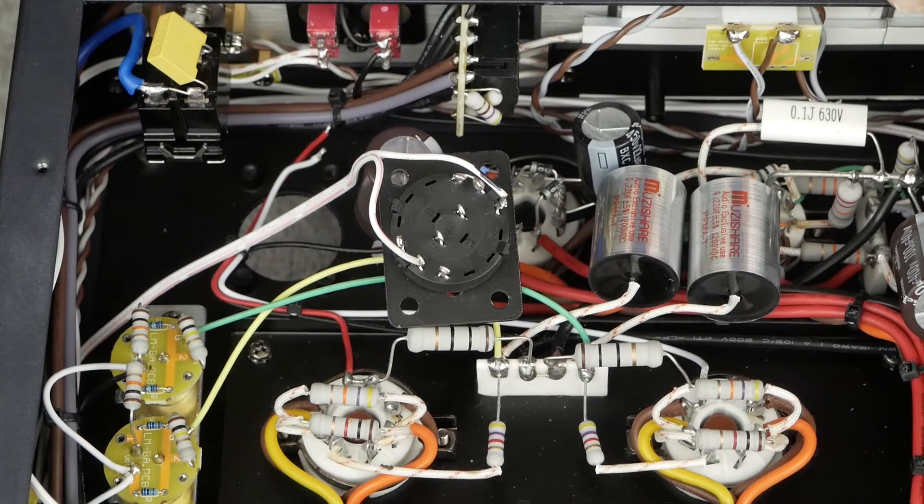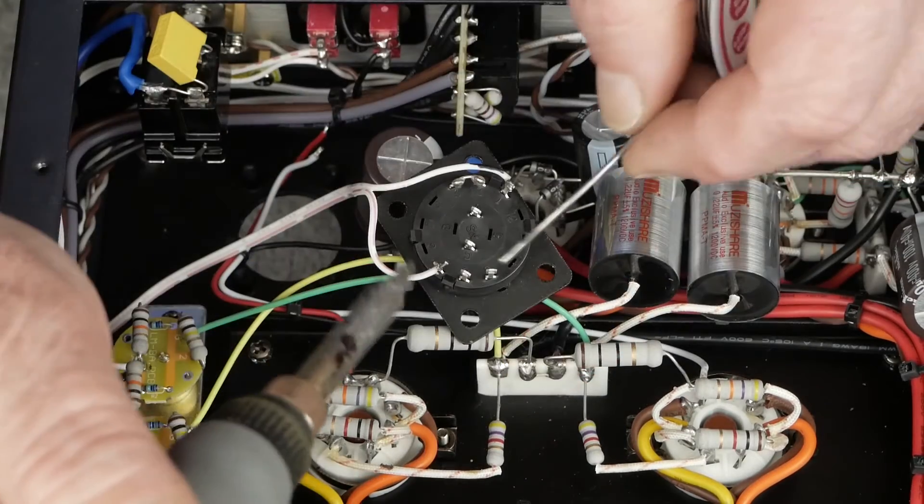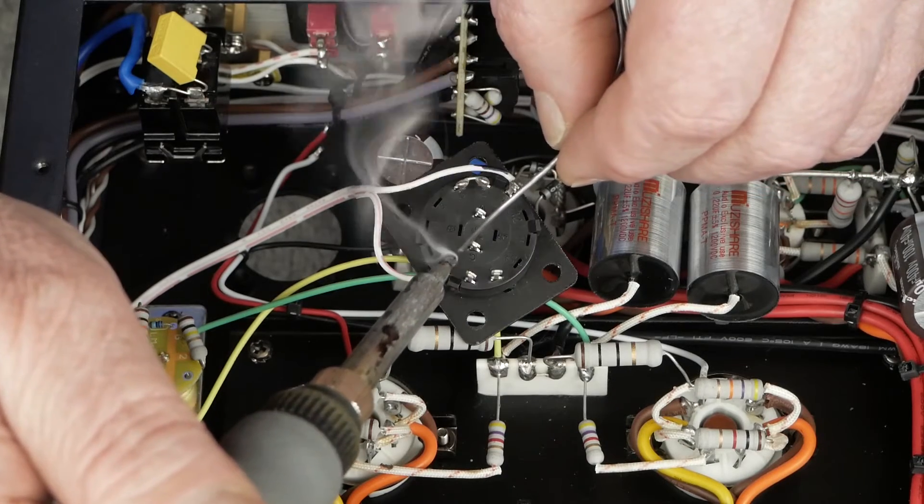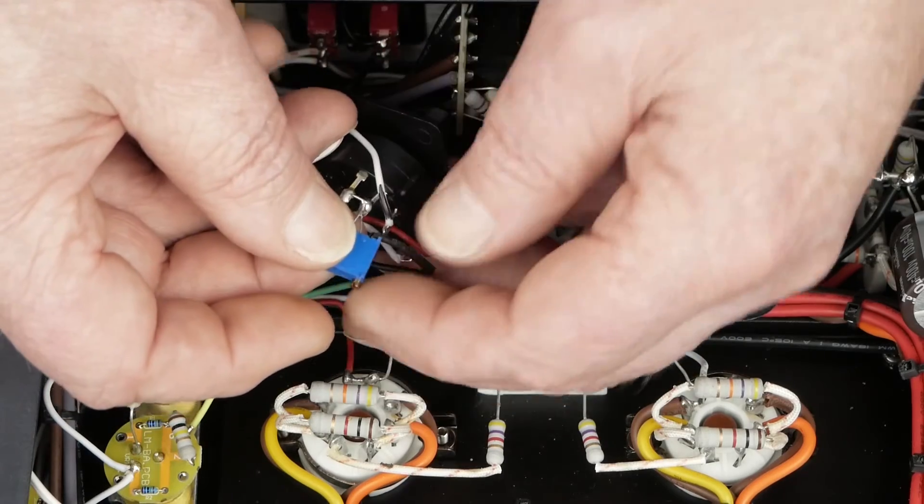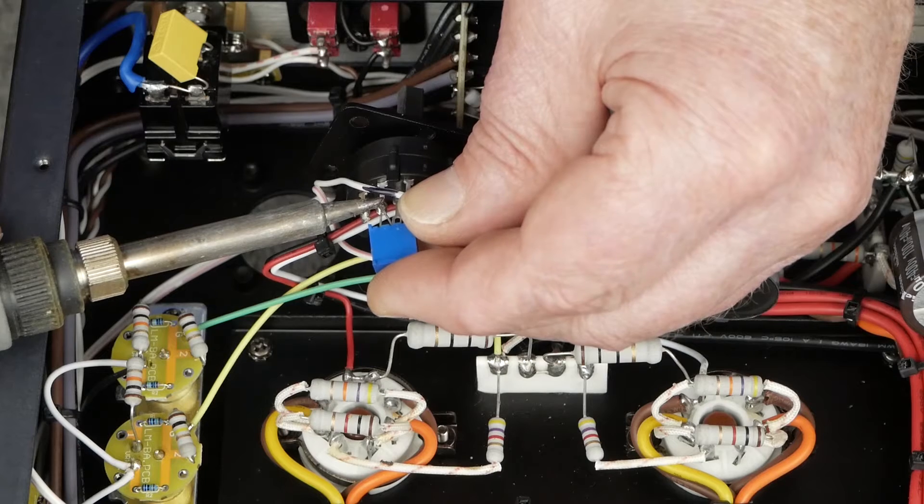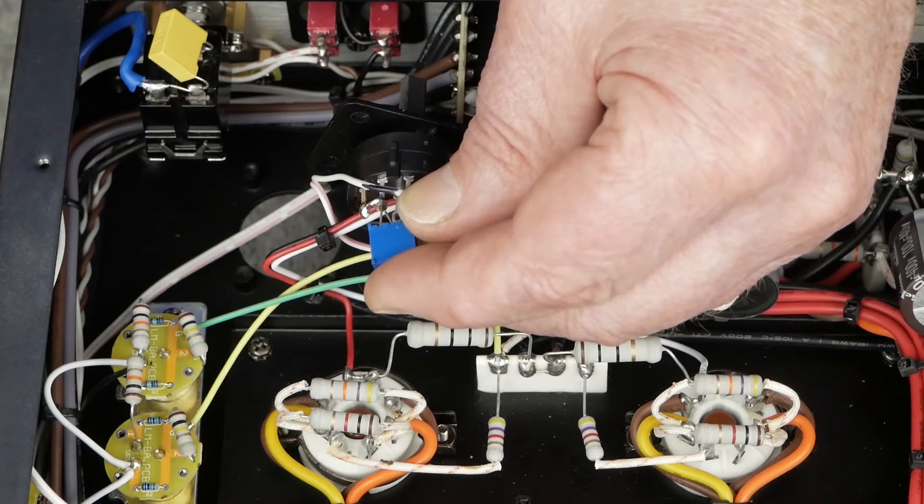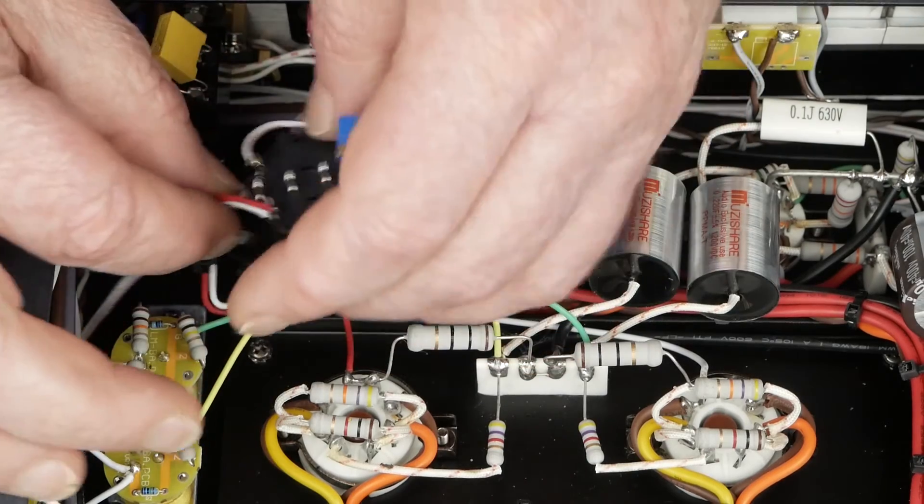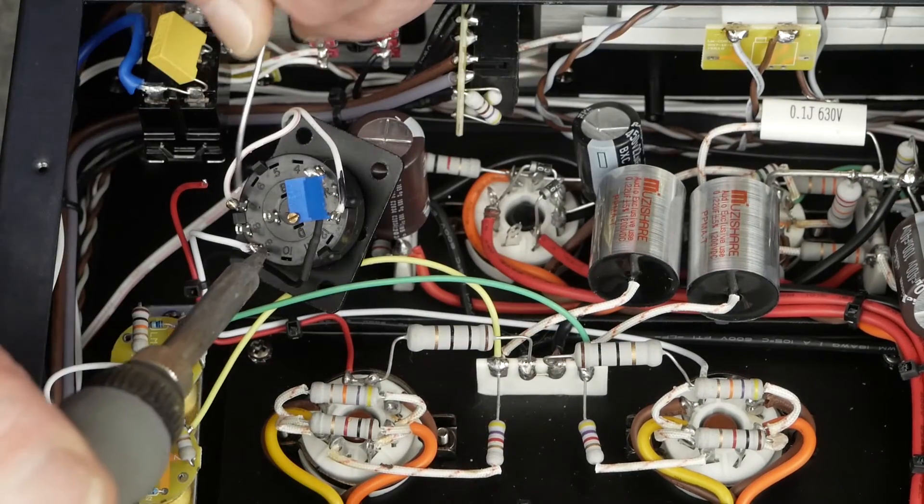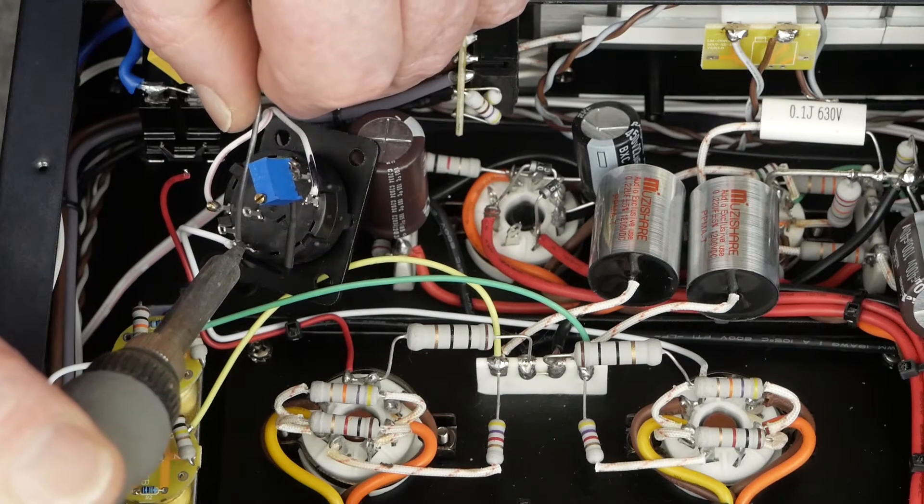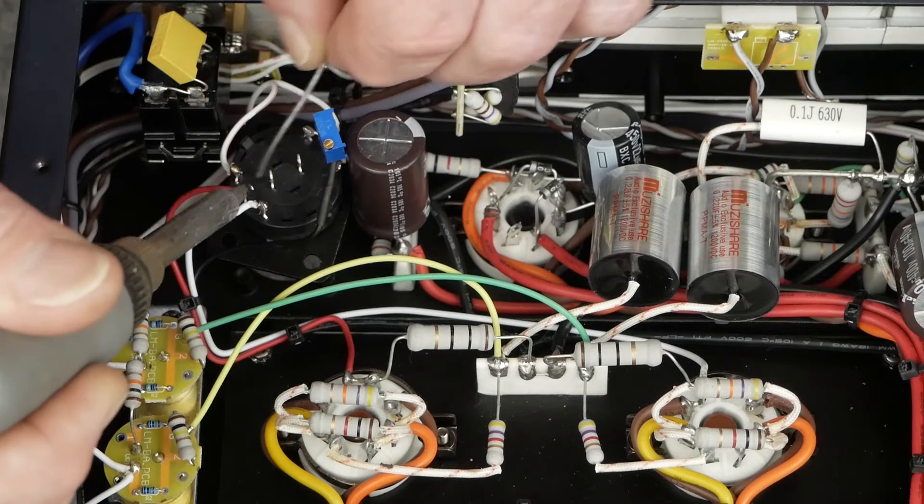The next thing we need to do is connect this one we put the black mark on over here by the ground side. It's a good thing we marked it because we would have no idea which way it went. Again, this is where you come in here and look at your phone picture to make sure you're hooking this stuff up right. This one's going to go right here. We want to solder this blue guy on right there.